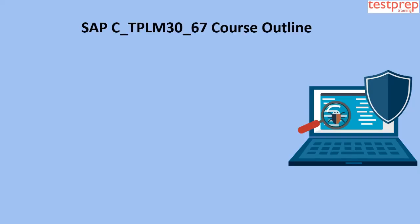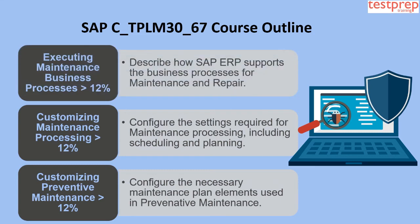Now we will discuss the course outline. Domain 1 is Executing Maintenance Business Processes, comprising more than 12 percent of the exam. It describes how SAP ERP supports business processes for maintenance and repair. Domain 2 is Customizing Maintenance Processing, also more than 12 percent, covering settings required for maintenance processing including scheduling and planning.